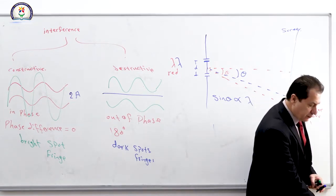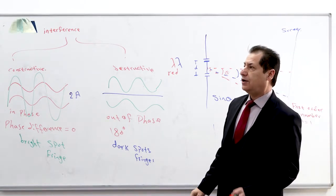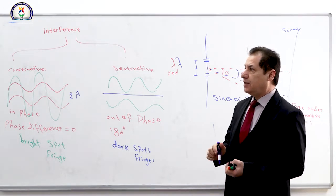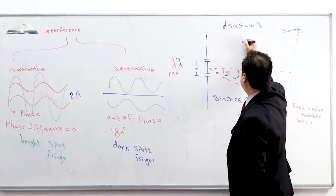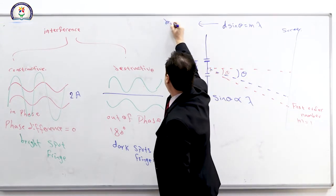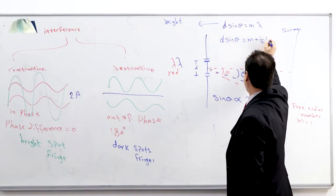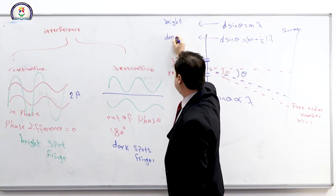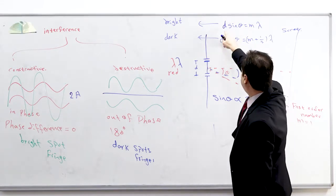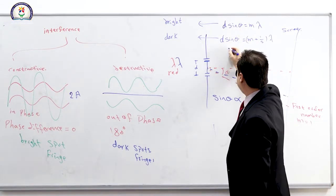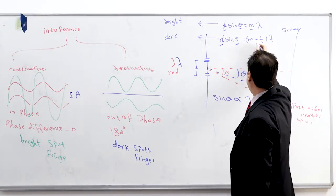Question number four: what data do you need to calculate the wavelength of light in a double slit experiment? The equation d·sinθ = mλ is used for bright fringes, and d·sinθ = (m + ½)λ is used for dark fringes. We need D (slit separation), theta (angle), and m (order number).